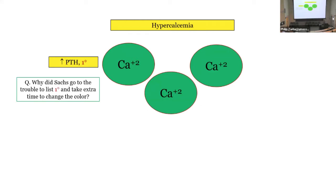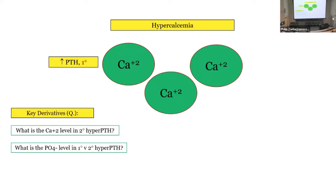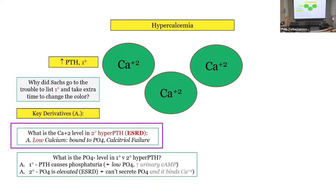What causes hypercalcemia? Primary hyperparathyroidism — it's in red, and I put 'primary' in there deliberately. Does secondary hyperparathyroidism cause hypercalcemia? No. In secondary hyperparathyroidism — which is renal failure — calcium is bound to phosphate and you have no vitamin D, so you're not absorbing it. The calcium in renal osteodystrophy is low, so PTH is high but calcium is low.